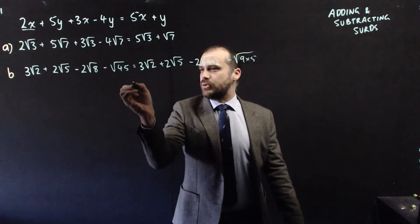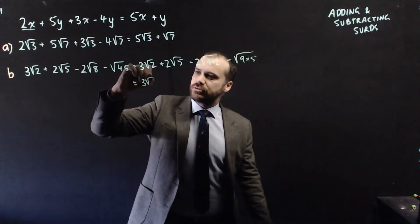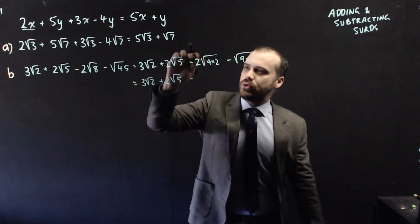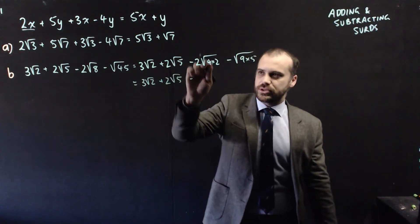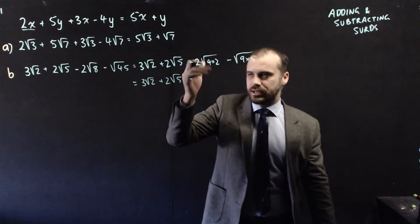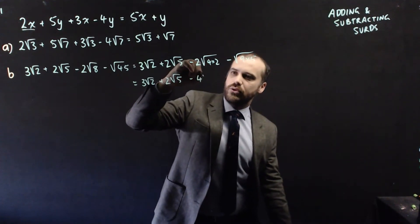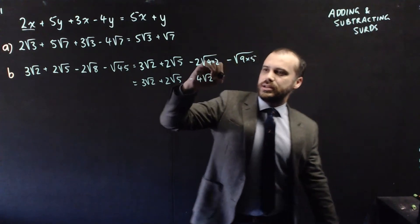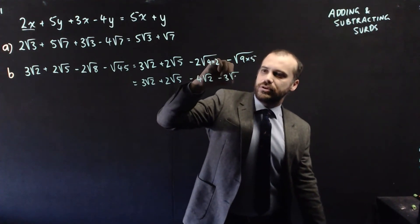Which means that all of this simplifies to 3 root 2 plus 2 root 5 minus that 4 comes out and gets multiplied by the 2. So 4 times negative 2 is negative 4 root 2. And that 9 comes out and we get negative 3 root 5.